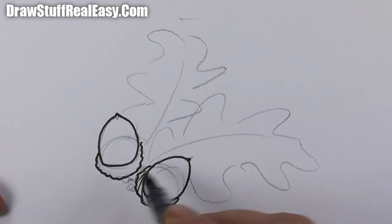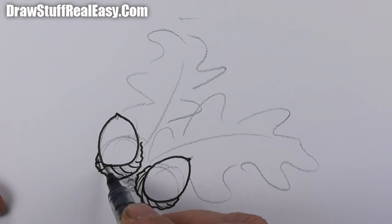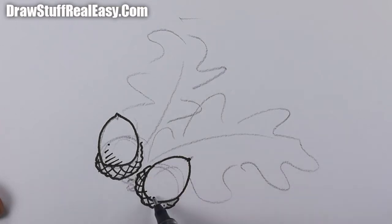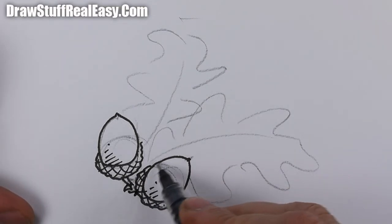Don't just do crisscross—it needs to kind of curve at the same time. Then you can put a bit of shading kind of like that.